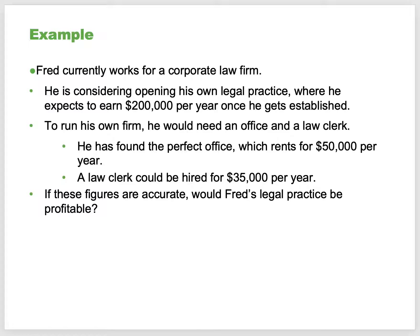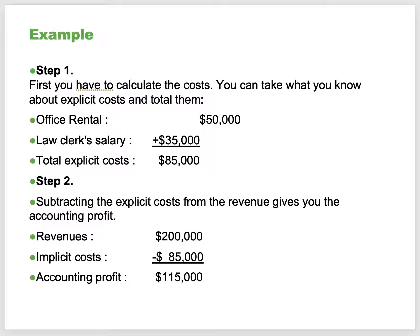Here's an example. Fred currently works for a corporate law firm. He's opening his own legal practice, where he expects to earn $200,000 a year once established. To run his own firm, he needs an office at $50,000 a year and a law clerk hired for $35,000. His explicit costs total $85,000. Subtracting explicit costs from revenue gives accounting profit: $200,000 minus $85,000 equals $115,000.